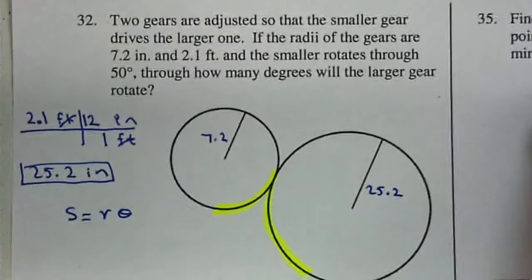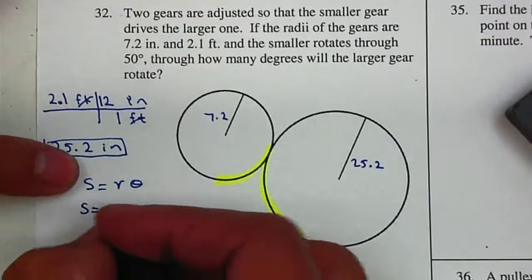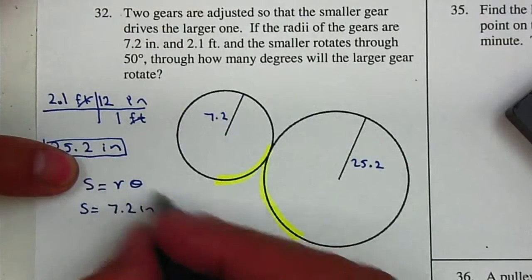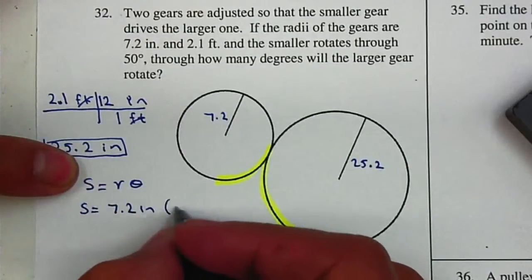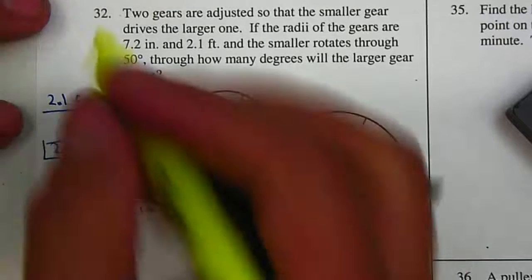They do give us the radius. So S equals 7.2 inches, and the angle multiplied by 50 degrees. That's what the angle is given to us.